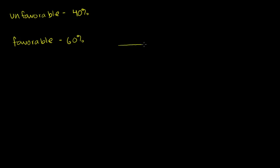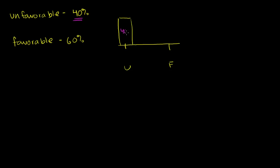If I were to draw the probability distribution, this is going to be a discrete one, because there are only two values that any person can take on. They could either have an unfavorable view or a favorable view. 40% have an unfavorable view, and 60% have a favorable view. Notice these two numbers add up to 100%, because everyone had to pick between these two options.